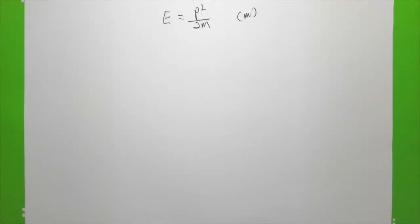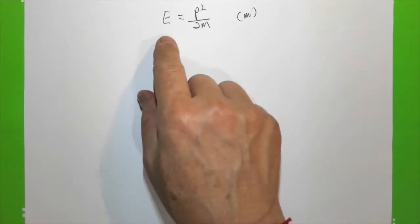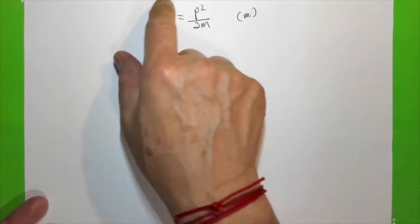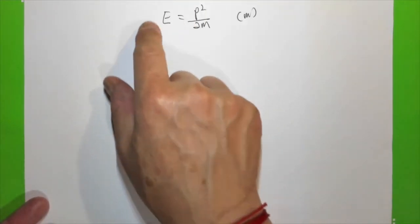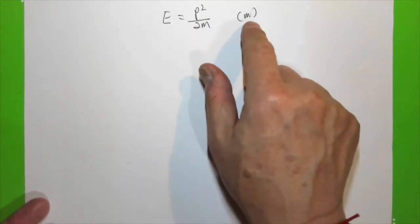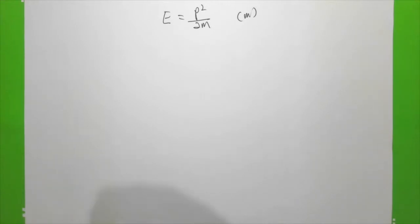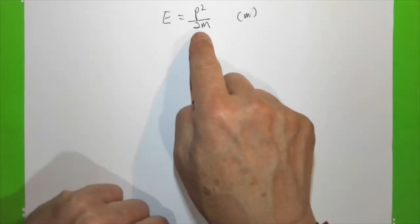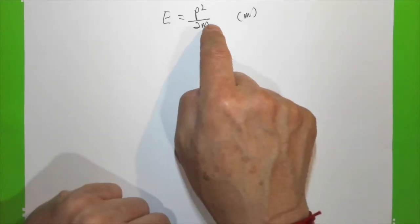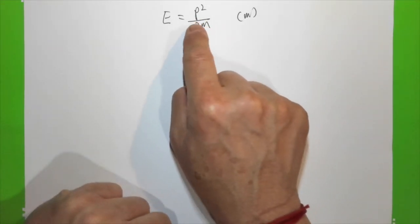Now let's look at a few examples. The first example: we need to rearrange this formula with m as the subject. Looking at this, I would like m not to be in the denominator.